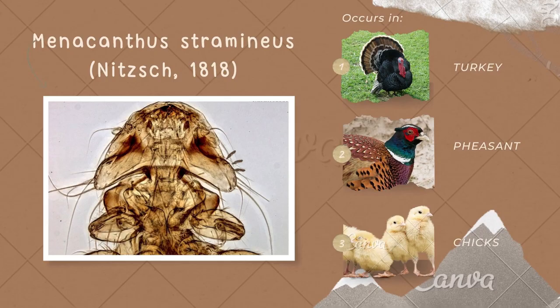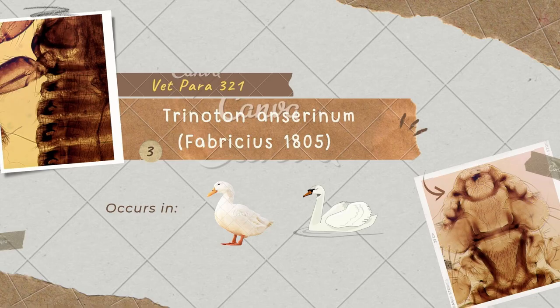Menacanthus stramineus, or the yellow body louse of poultry, occurs on skin areas that are not densely feathered, like the breast, thighs, and around the anus. It occurs on turkeys and Japanese pheasants and is especially harmful to chicks. Trinoton and Cyrenum may be found on ducks and swans.